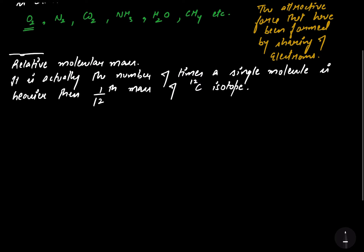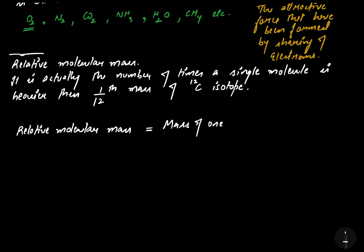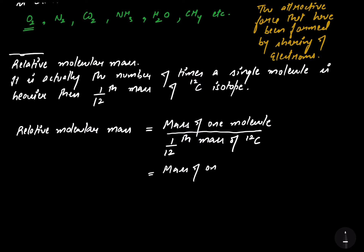It can be represented in formula form: relative molecular mass is equal to the mass of one molecule divided by one-twelfth the mass of the carbon-12 isotope. This can also be written as the mass of one molecule divided by the mass of the carbon-12 isotope, into twelve.